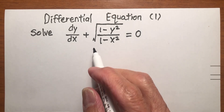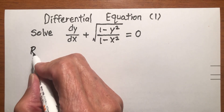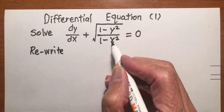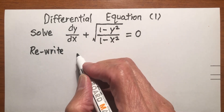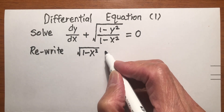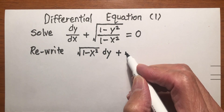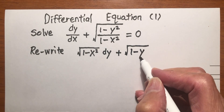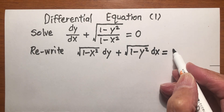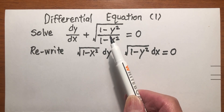Let's rewrite the differential equation. Multiply the denominator to the whole equation. We get the square root of (1 minus x squared) dy plus the square root of (1 minus y squared) dx equals 0. We just changed the given differential equation to this form.